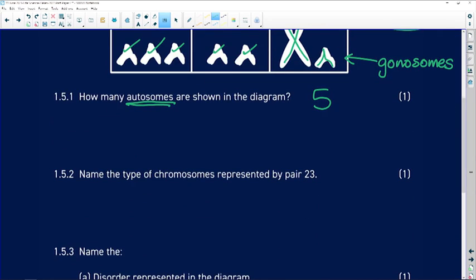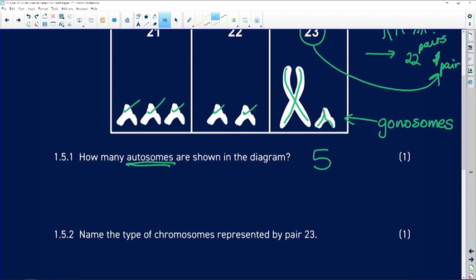Name the type of chromosomes represented by pair 23. We can call them gonosomes or sex chromosomes. Either term is acceptable.